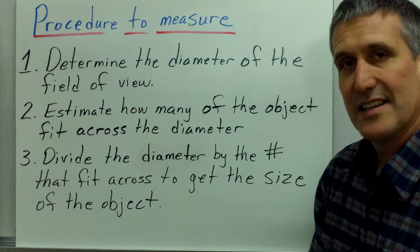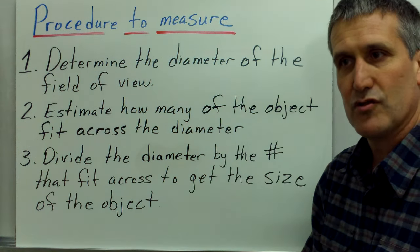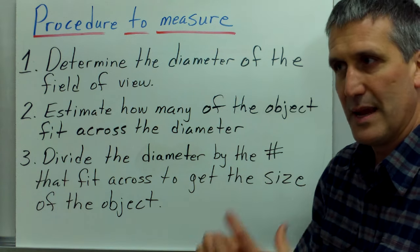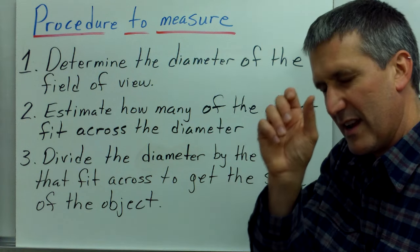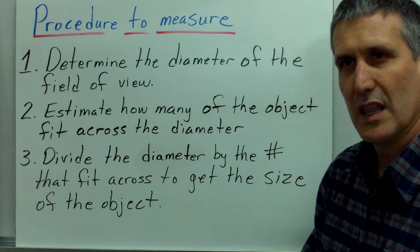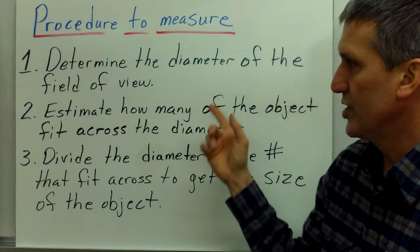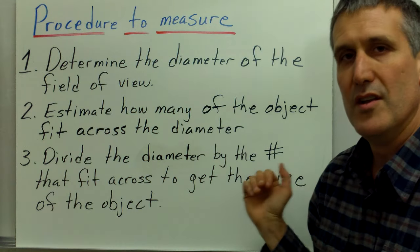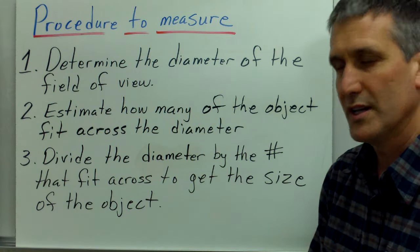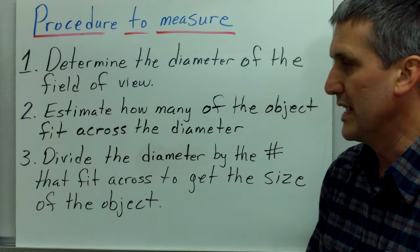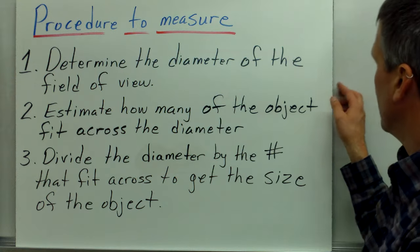The next thing is you have to estimate how many of the objects that you're trying to measure would fit across the field of view. A lot of times you have to estimate or try to mentally picture how many would form a little conga line across the diameter. But once you have that, you can take the diameter and divide the diameter by the number of objects that you estimated would fit across the diameter, and that would give you the size of each one of the objects that you're trying to measure.